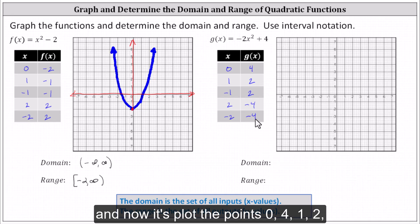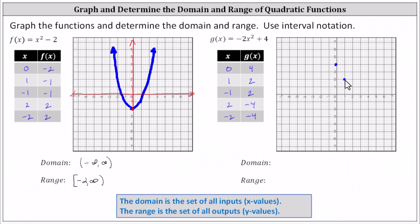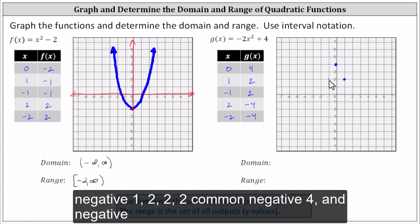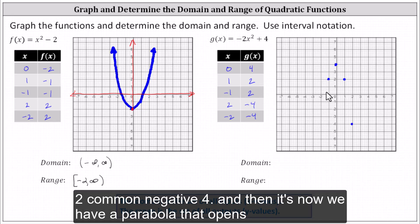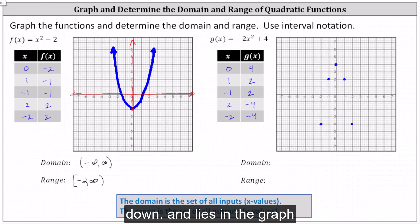Now let's plot the points: zero comma four, one comma two, negative one comma two, two comma negative four, and negative two comma negative four. Notice we now have a parabola that opens down.